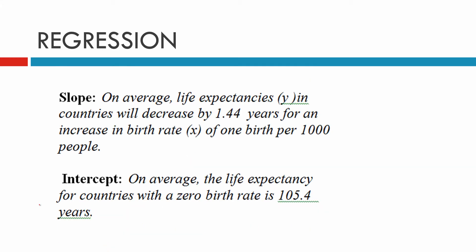The y-intercept predicts the value of y when x equals 0. We know that. To find y-intercept we always put x equal to 0. For our example, the slope was negative 1.44. So on average, the life expectancy in countries will decrease by 1.44 years for an increase in birth rate of 1 birth per 1,000 people.